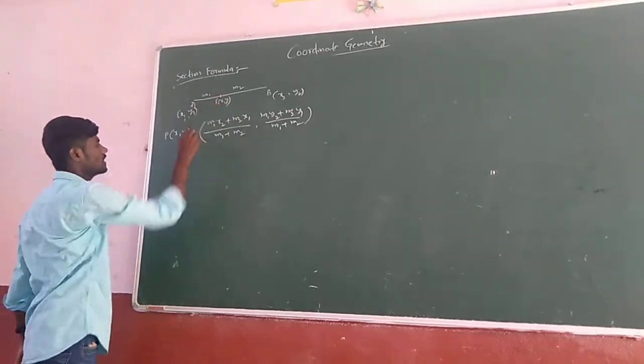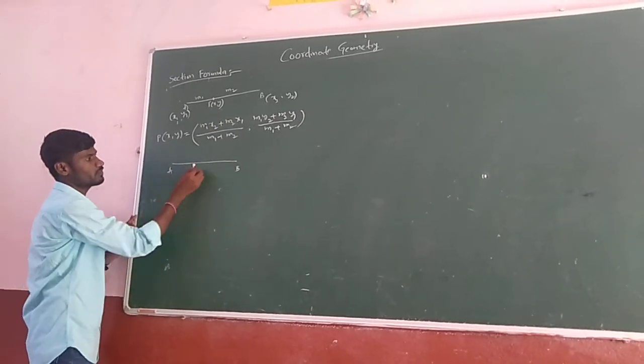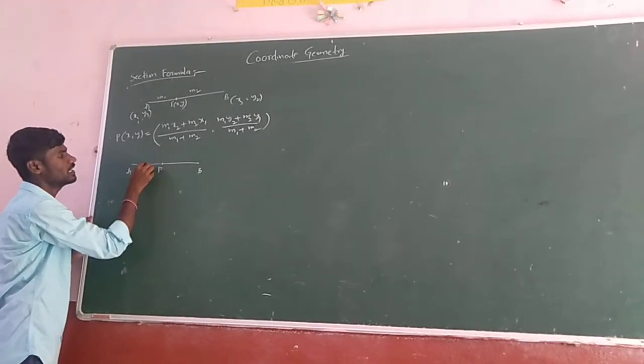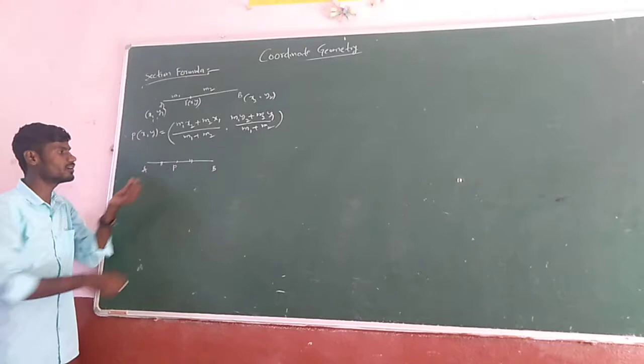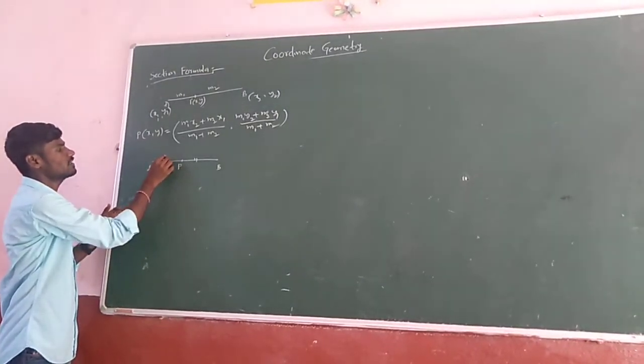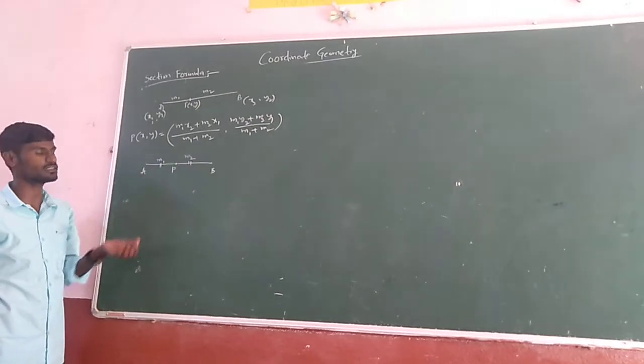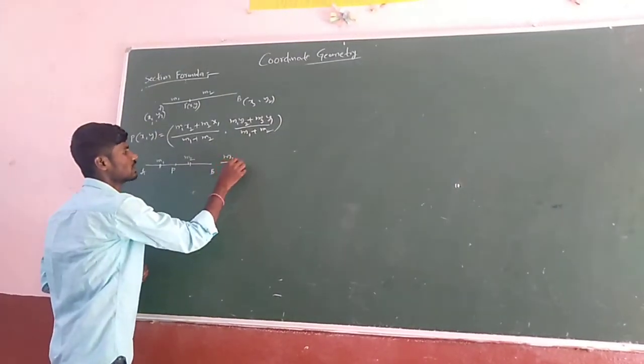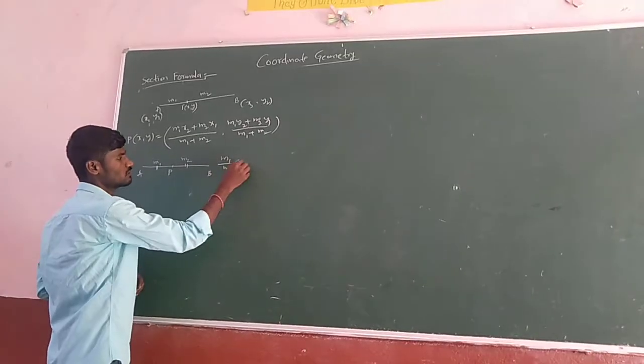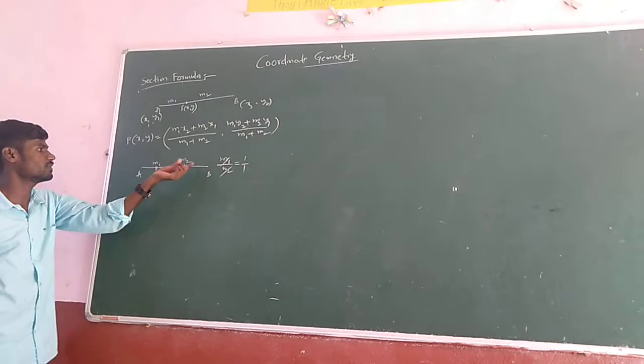Next, if you take same line AB, in this case, if point P lies exactly in the middle part, exactly in the middle, means it is said to be midpoint. Middle means what? Here M1, M2, both are equal part. If it is 2, it is also 2. If it is 1, 1. Means if you take M1 by M2, what will we get? M1 by M2 ratio means M1 by M2. Both are equal means we will get 1 by 1. Next, it means equal.